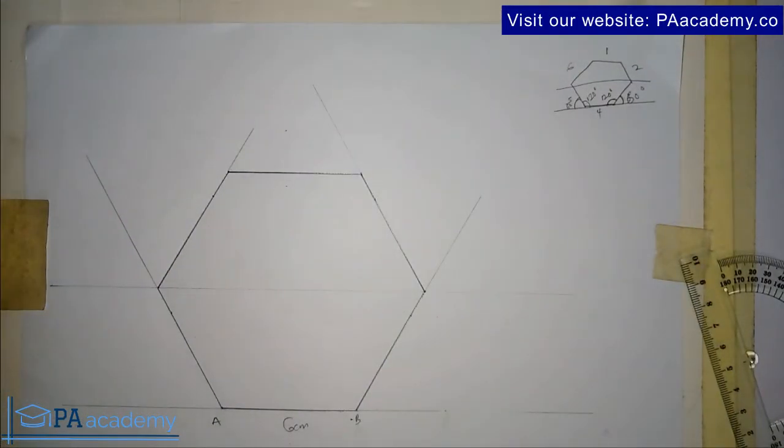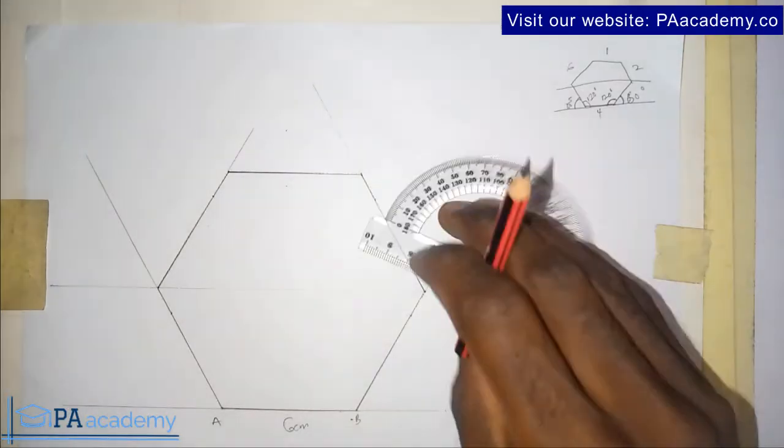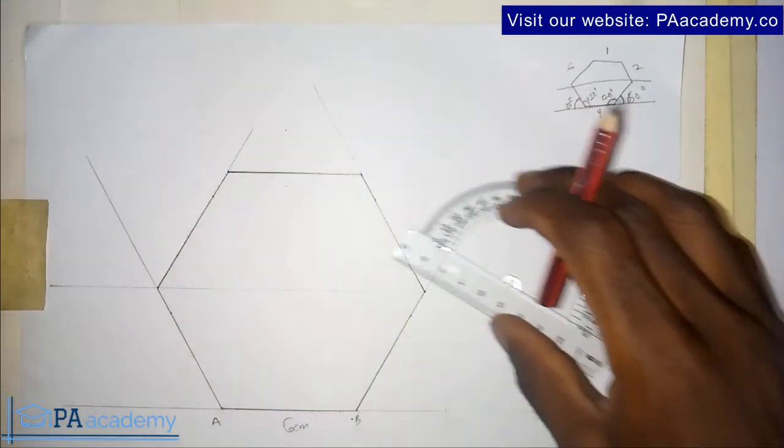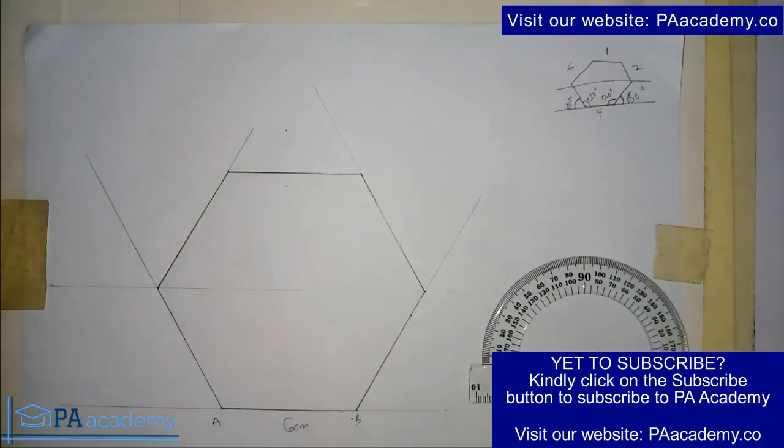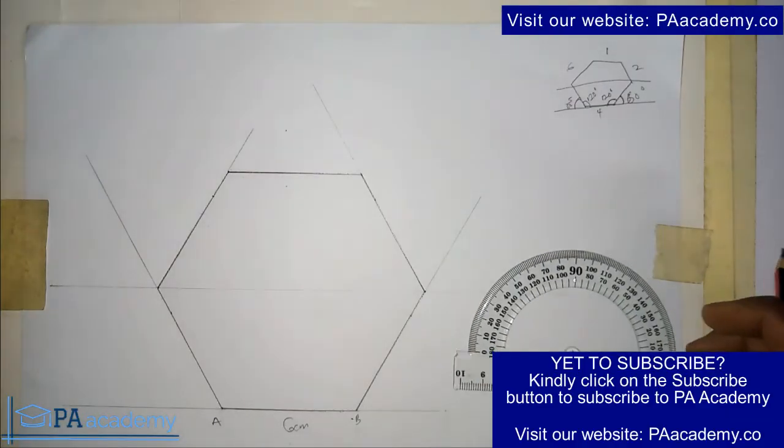So this is it, we already have our hexagon just by using our protractor, our ruler, and our pencil. That's how you go ahead to construct a hexagon using your protractor.